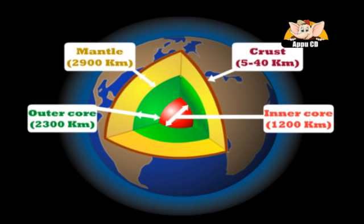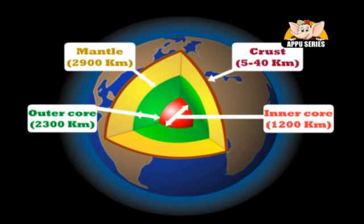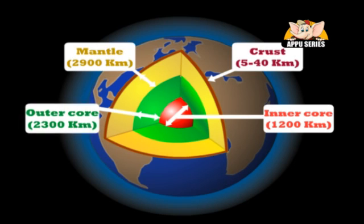Earth's magnetic field is believed to be controlled by the liquid outer core. Do you know it takes 6,355 kilometers to reach the center of the Earth?